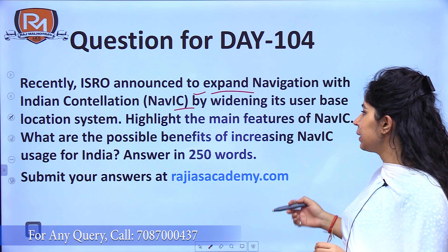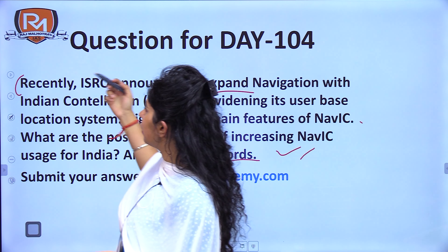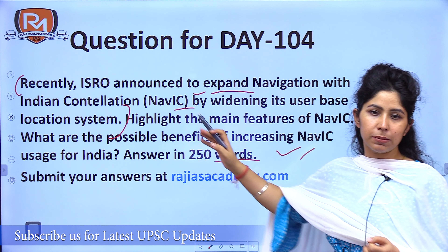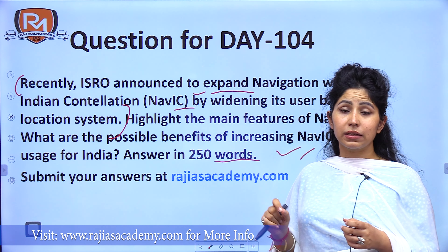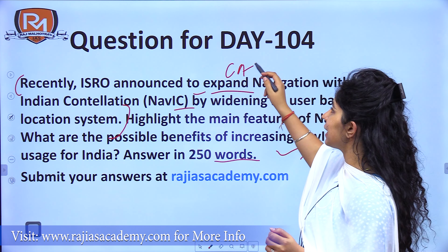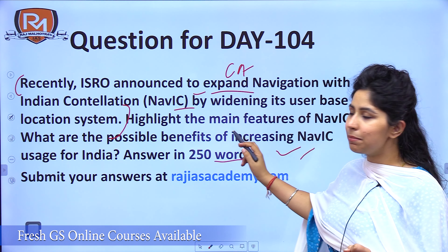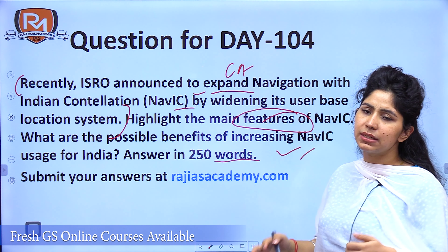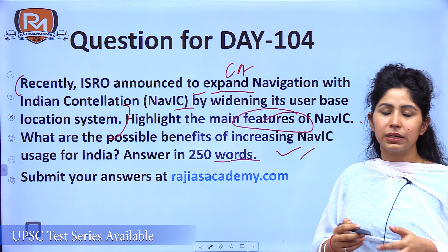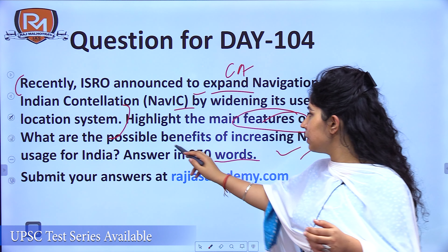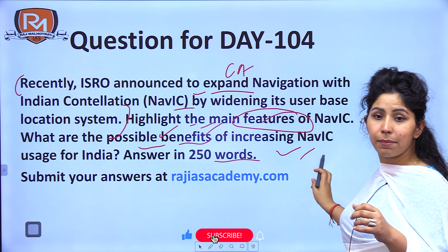The topic for today is Navigation with Indian Constellation, or NAVIC. This topic was covered in detail in our weekly current affairs session for science, tech, and environment. The question is: Recently, ISRO announced plans to expand Navigation with Indian Constellation or NAVIC by widening its user-based location system. Highlight the main features of NAVIC. What are the possible benefits of increasing NAVIC usage for India? Answer in 250 words.